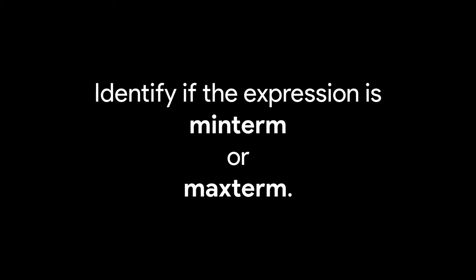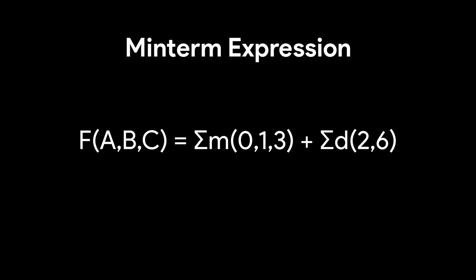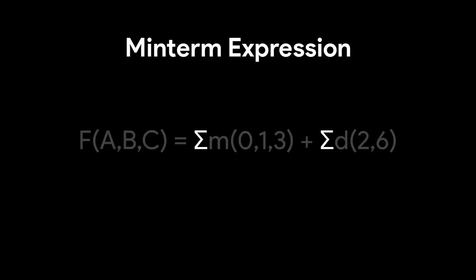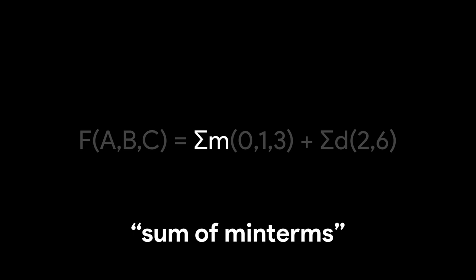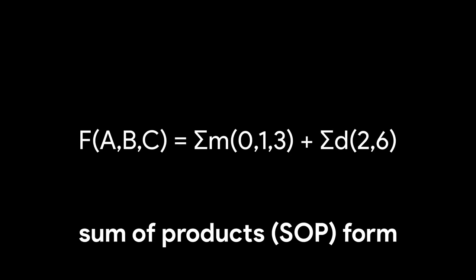The second thing to notice is whether or not the expression is a min-term or max-term expression. A min-term expression uses a capital Greek letter sigma and then a lowercase m and possibly a lowercase d. Sigma, used in science and math classes, is used to represent taking a sum. The lowercase m stands for min-terms and a lowercase d, if present, stands for don't care terms. Therefore, sigma m can be read as sum of min-terms, which is the format of a sum of products expression.